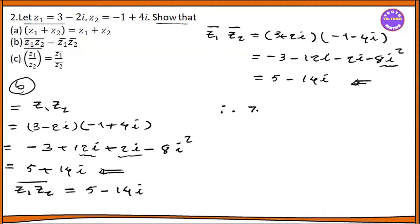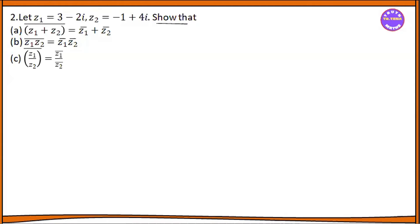So z1 times z2, the whole bar equals z1 bar times z2 bar. We'll use this property.